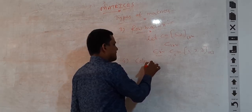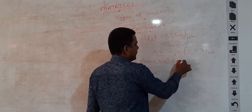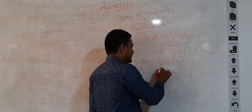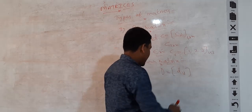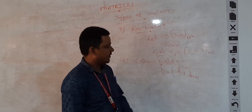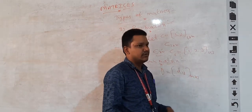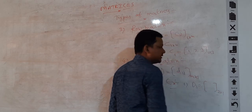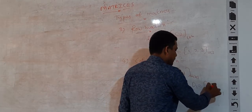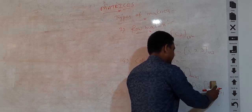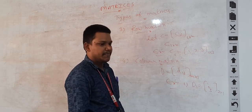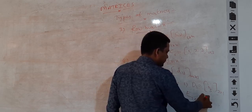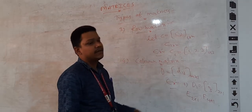Next is the column matrix. A matrix consisting of only one column is known as a column matrix. Let D be a matrix with elements of the form D-i-j. Having one column means the order of the matrix is m by 1, which is known as the column matrix. For example, D1 is a 3 by 1 matrix — 3 rows and 1 column — with elements 1, 2, 3. Similarly, E is a matrix of order 2 by 1, and F is a matrix of order 4 by 1. We can define so many column matrices.